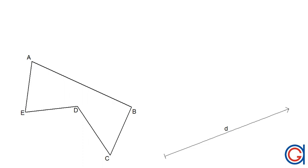Hello, today we're going to learn how to translate a geometric shape such as an irregular polygon in this case along a given vector d.